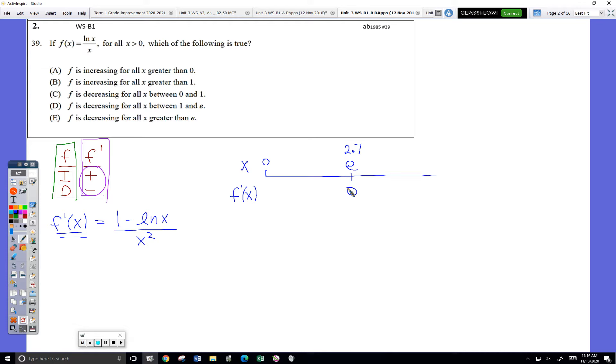We want to make sure we find all the places, all the x's which will cause f prime to either be zero or undefined. Best thing to do is focus on numerator and denominator separately. You have to remember this fact: natural log of zero is undefined. Natural log of any negative number is also undefined. So I do need to account for that as well, that when x equals zero my f prime value will be undefined.